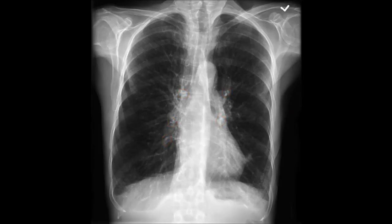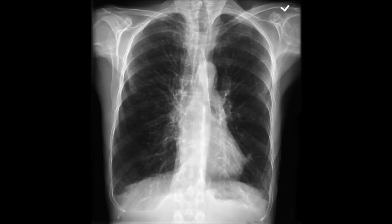The hyperinflated lungs and flattened diaphragm are characteristic of COPD. The blunted costophrenic angles are actually the result of the flattened diaphragm — a bit of a red herring. The areas of opacity in the hyla are likely due to calcification of pulmonary blood vessels, so I would strongly suspect that this patient was a heavy smoker. Smoking is bad for you, and this is what happens — so the lesson is don't smoke.